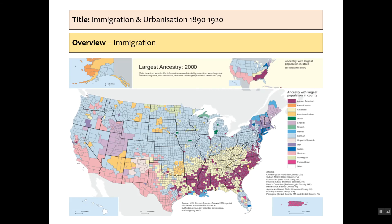Looking back at the map we showed in the last video, we can really see that European immigration is predominantly focused in the northeast, whereas the southern states are mostly African American but with very few immigrants arriving there. The west is slightly different.